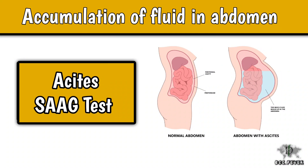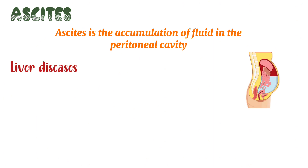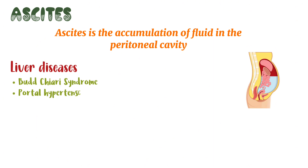Ascites and the test for ascites fluid. Ascites is the accumulation of fluid in the peritoneal cavity. In liver diseases, it can be due to Budd-Chiari syndrome, portal hypertension, and hepatic failure.